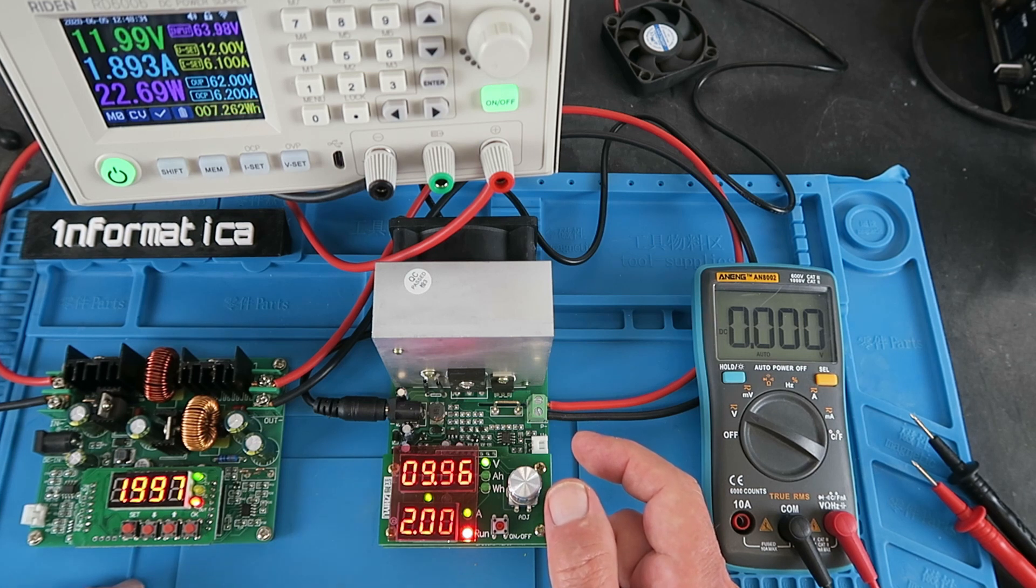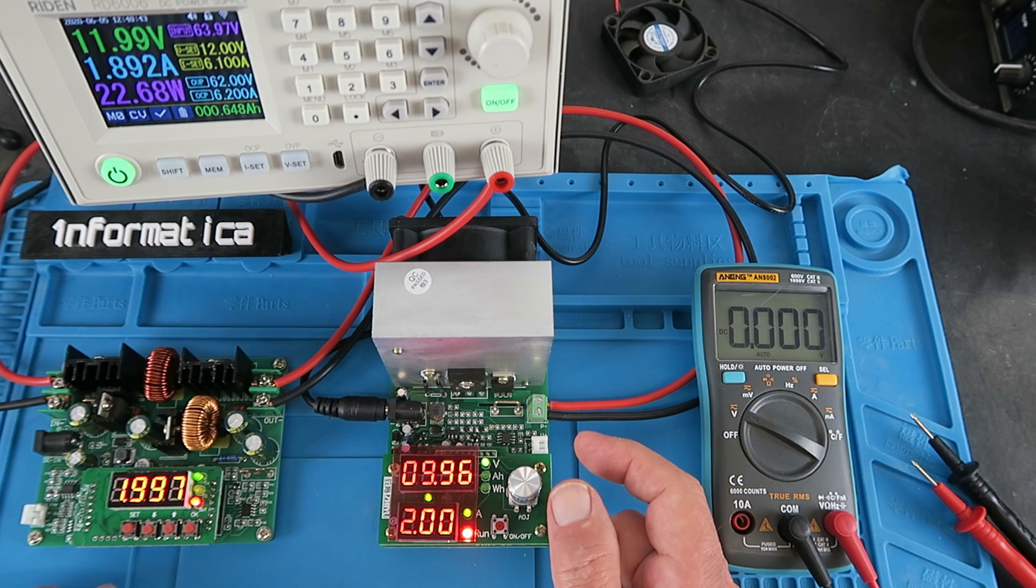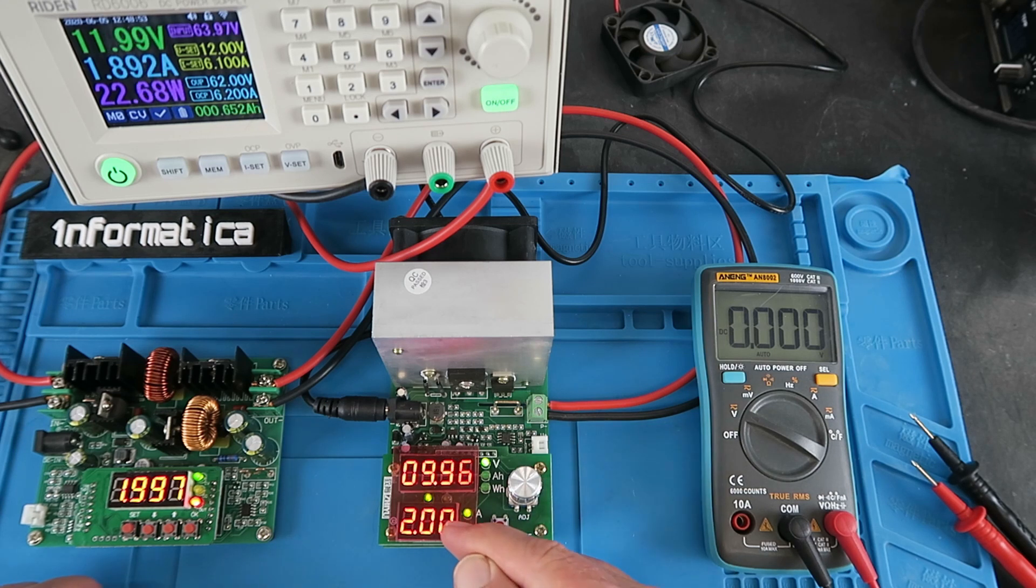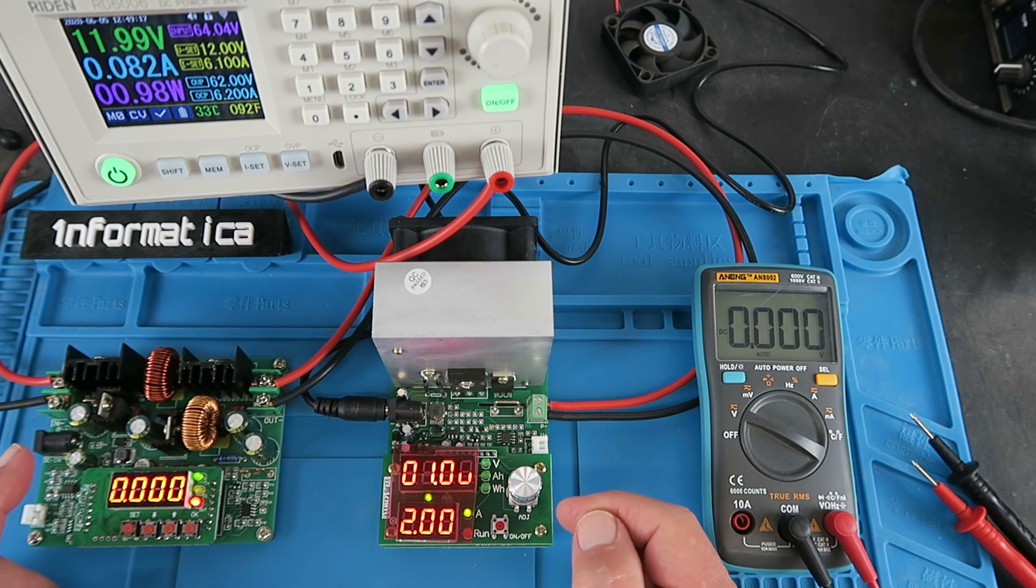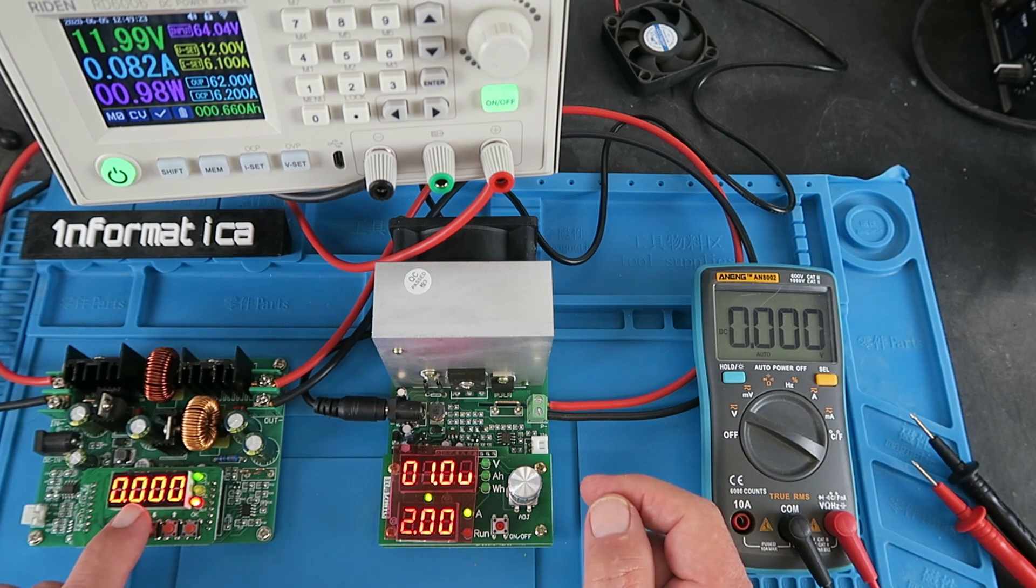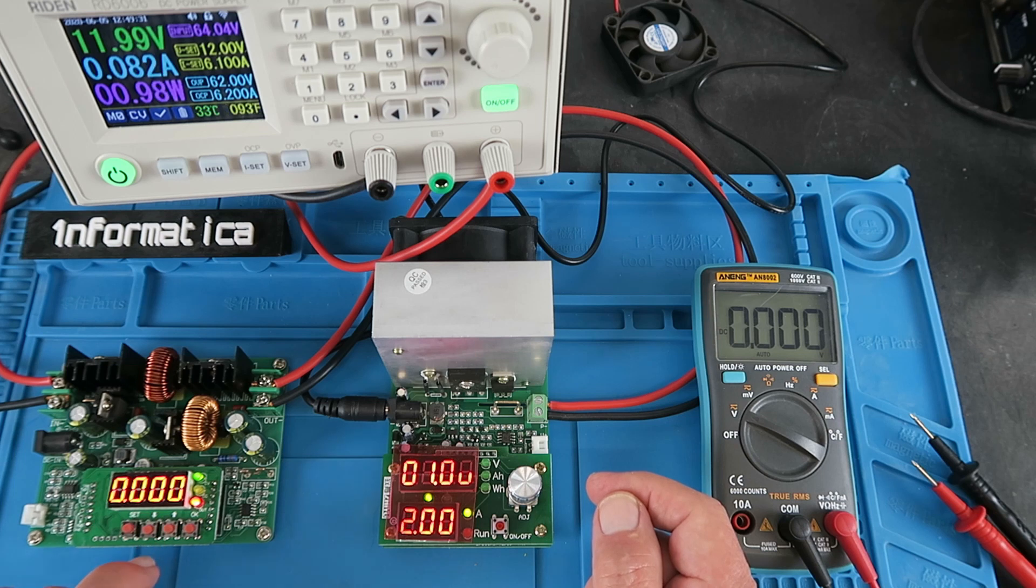So yes, that is working very well. We can see, as it's not in its boost mode, the current being drawn from the power supply there is pretty much equal to the load current. So far, with the module, we've been in its simple mode. It has other features, including the ability to show not only the current but also the number of watts and ampere hours.